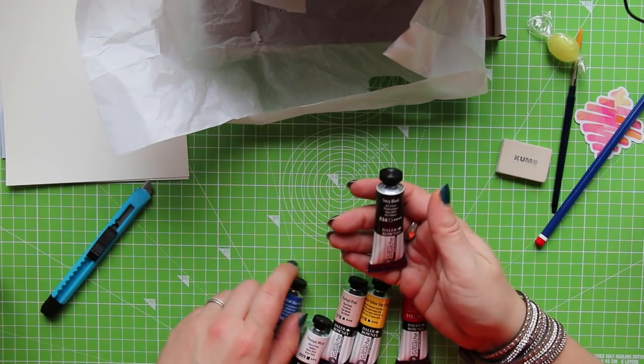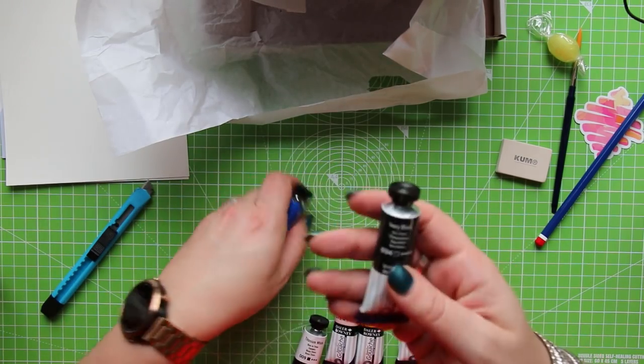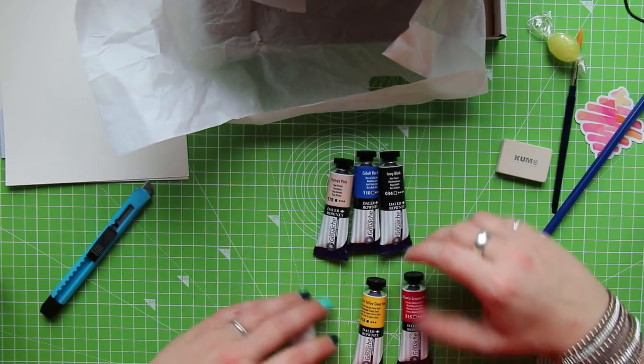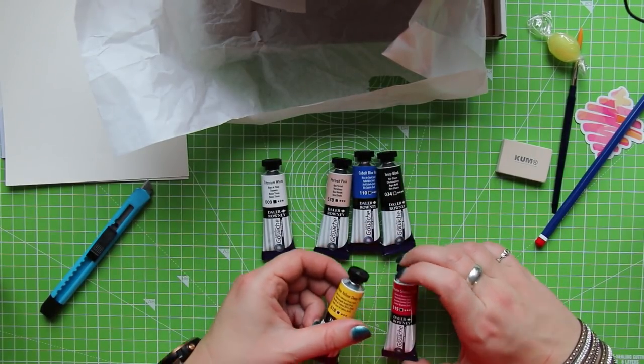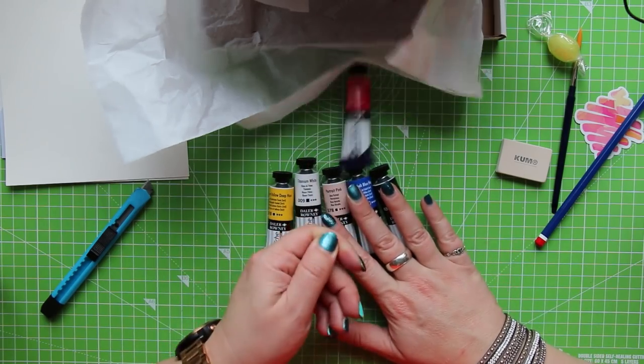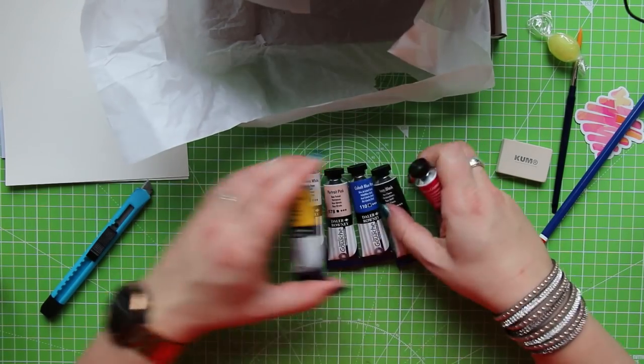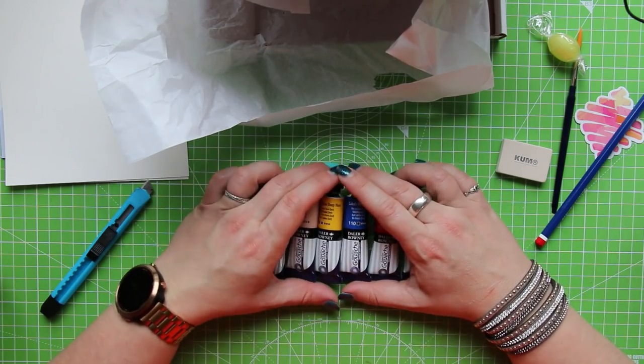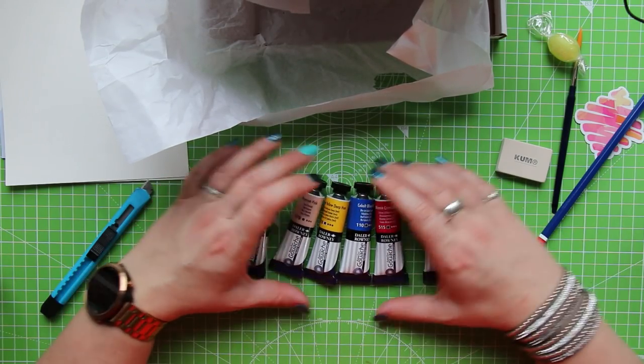So we have got ivory black, cobalt blue hue, portrait pink, titanium white, cadmium yellow deep hue, alizarin crimson. So the good news is that we've got the primary colours, which is delightful. That is a really nice, well-rounded set of colours.